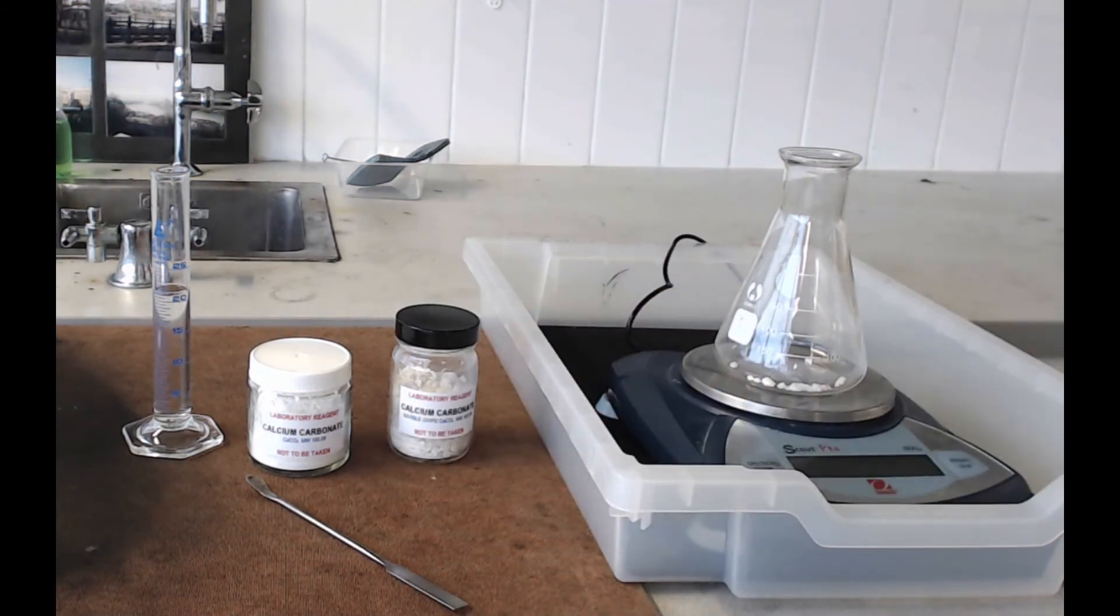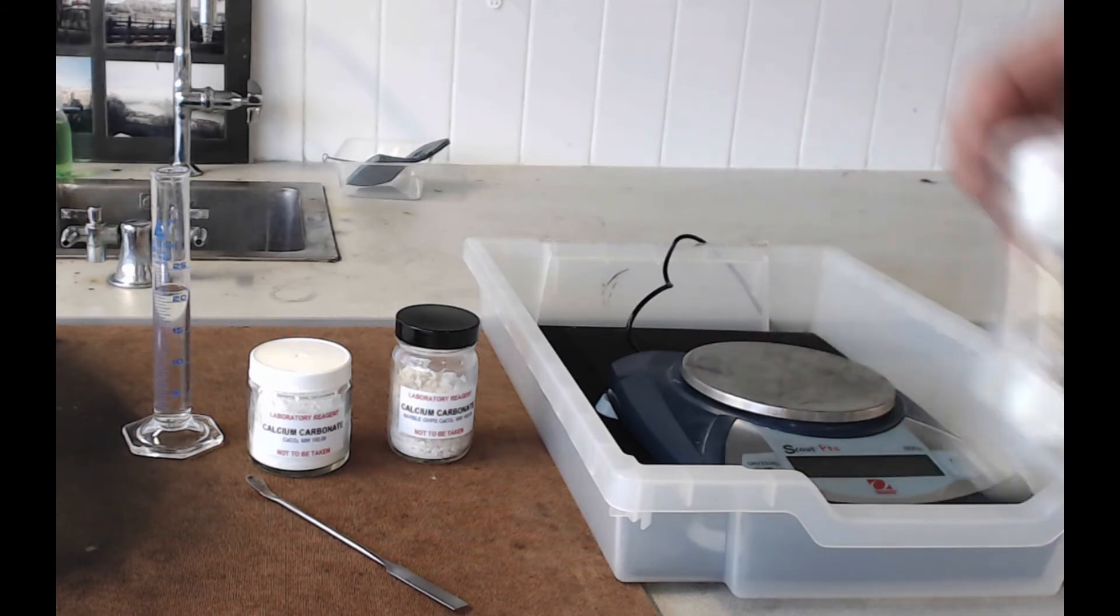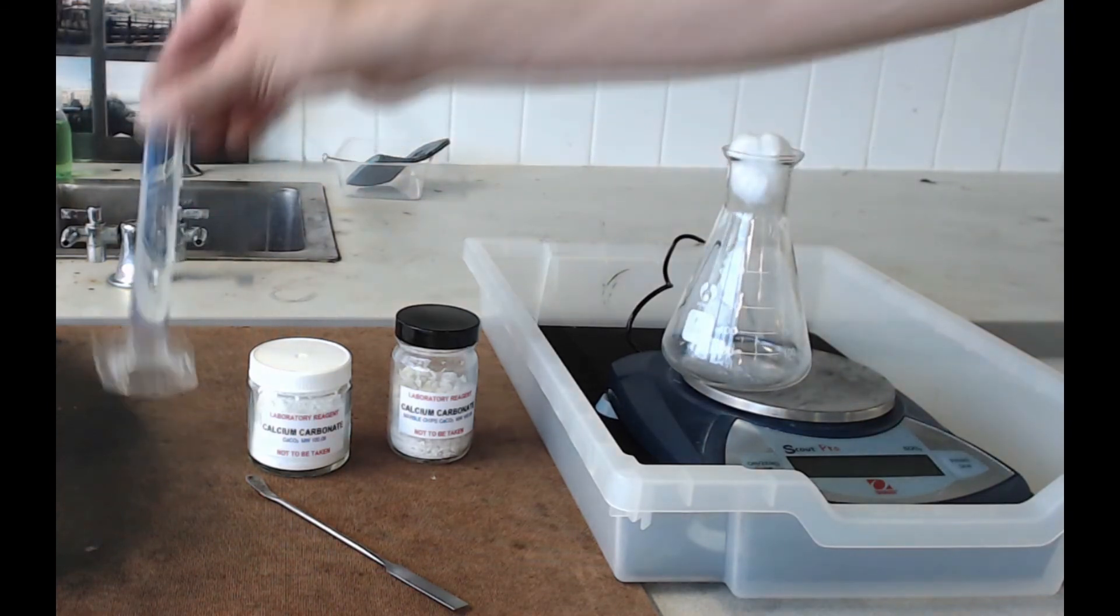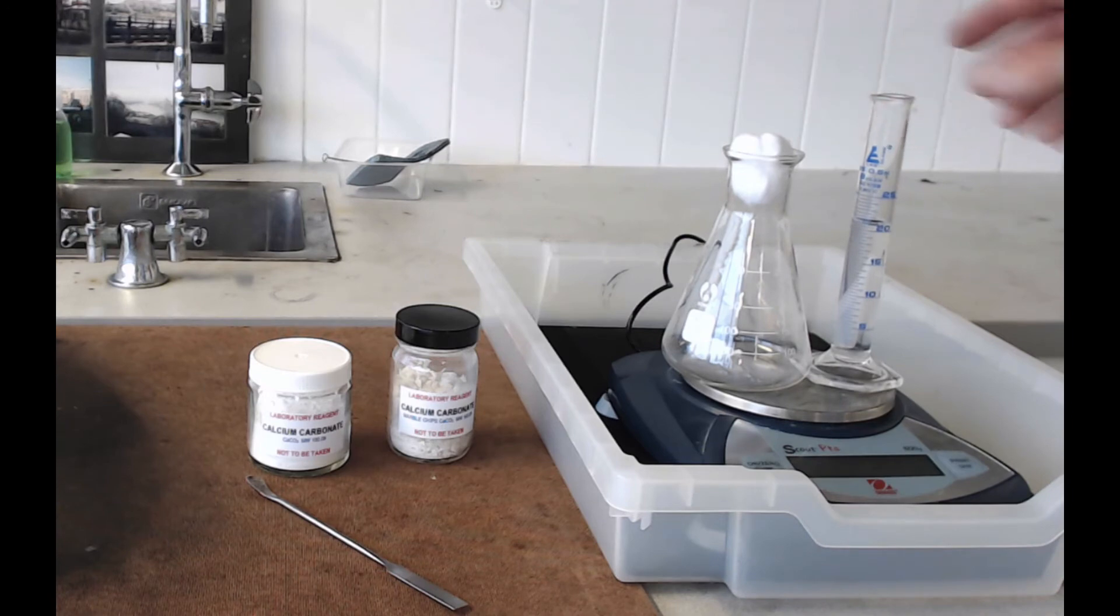Now the next thing to do is put your cotton bud on top of the flask. Take the flask off the balance and zero it. What you want to do now is weigh the measuring cylinder, the conical flask with the marble chips, the acid, and the cotton bud all together on the balance.